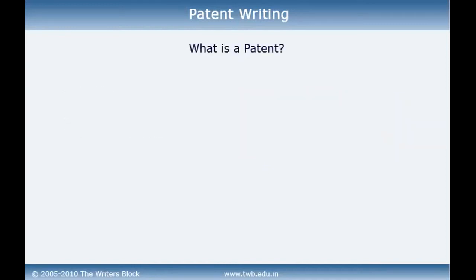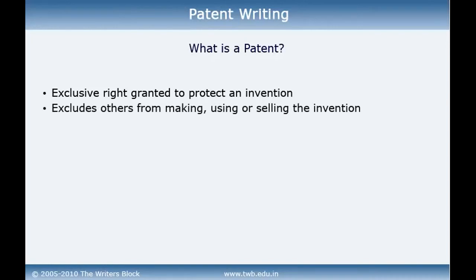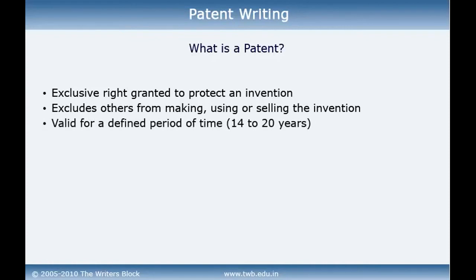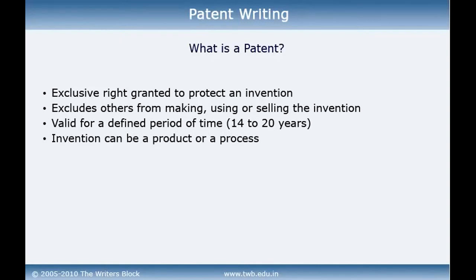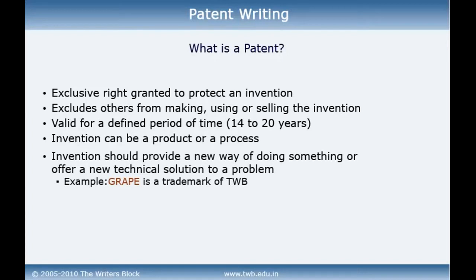A patent is an exclusive right granted to protect an invention. It excludes others from making, using, or selling the invention. A patent is typically valid for a defined period of time, say 14 to 20 years. The invention can be a product or a process, and it should provide a new way of doing something or offer a new technical solution to a problem.